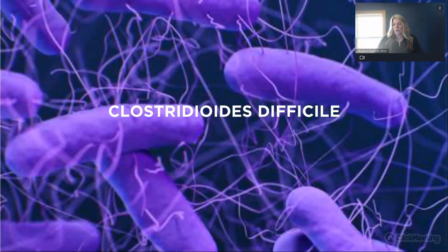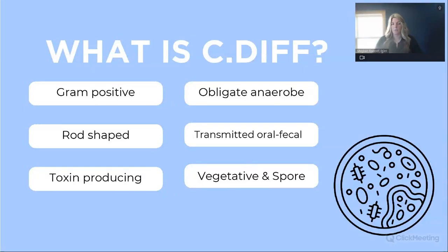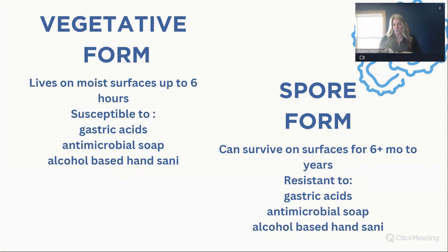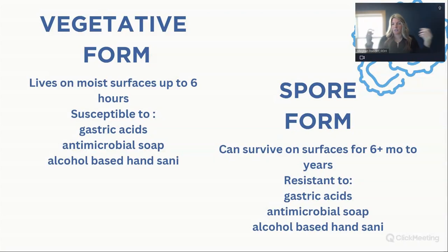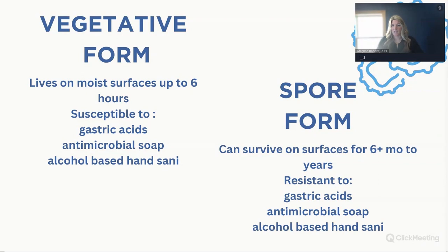How can we prevent C. diff? It's gram positive, an obligate anaerobe, rod shaped, transmitted oral-fecal, toxin producing, and vegetative spore. In its vegetated form, it can live on moist surfaces for six hours. It is resistant to gastric acids, antimicrobial soaps, and alcohol-based hand sanitizers. In its spore form, it can live on surfaces for six months and is resistant to gastric acids, antimicrobial soaps, and alcohol-based hand sanitizers.